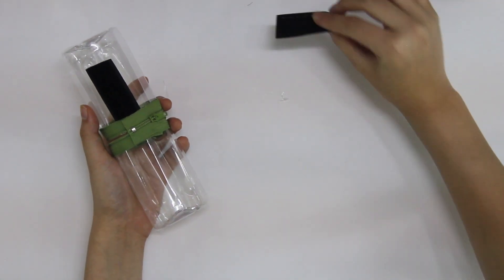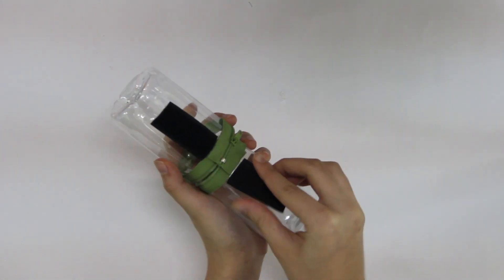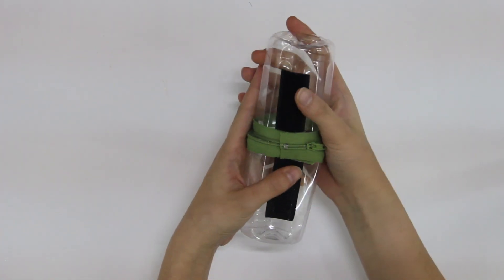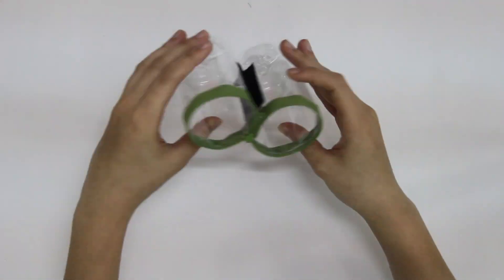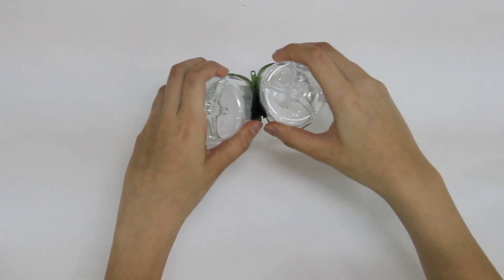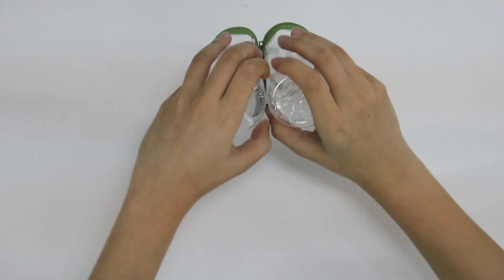But to secure it, we need to attach a Velcro. Measure where you want to put the Velcro in order to make it equal for the two sides. Use a glue gun to stick it after measuring. You can use your permanent marker to draw a small dot on it.